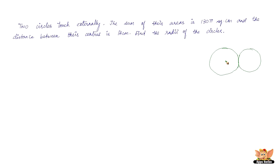Both circles have centers — let's name them C1 and C2. The radius of C1 is r1 and the radius of C2 is r2. The sum of their areas is 135 square centimeters, and the distance between their centers is 14 centimeters. We need to find r1 and r2.